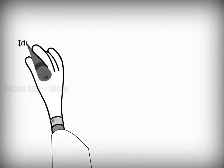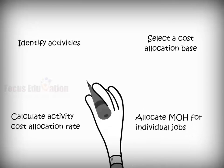This completes the four-fold application to allocate the indirect costs using activity-based costing.